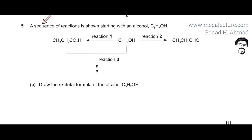In this question, the sequence of reactions is shown starting with an alcohol, C3H7OH. This is propanol. So you're starting with propanol and draw the skeletal formula of the alcohol propanol. That's the first thing we need to do.